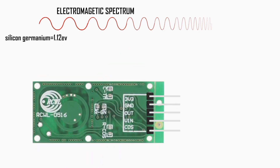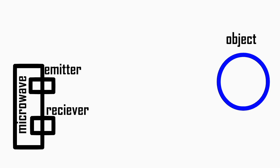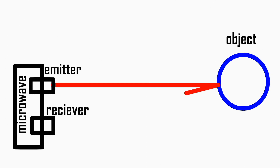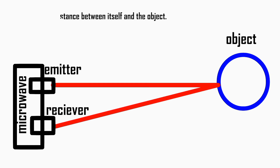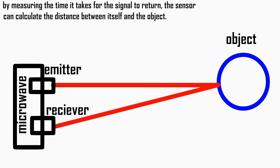Microwave sensors utilize the principle of sending out microwave signals and analyzing the reflected signal to detect objects and measure their distance. These sensors operate based on the Doppler effect, which involves changes in frequency and wavelength of a wave as perceived by a moving object relative to the source of the wave.